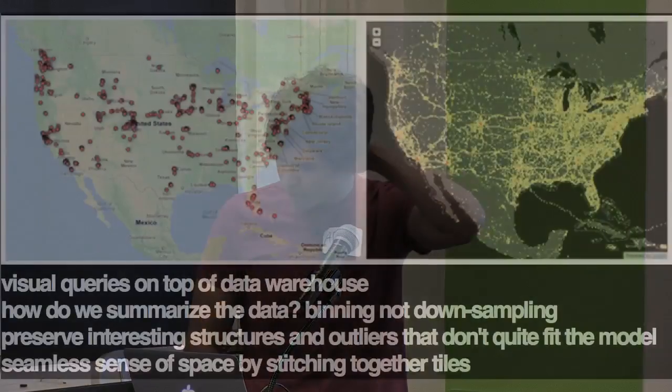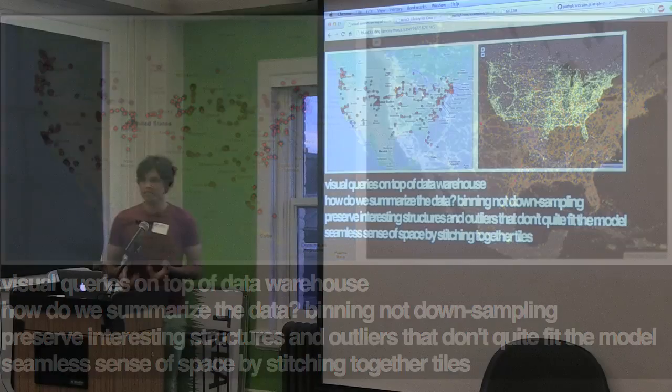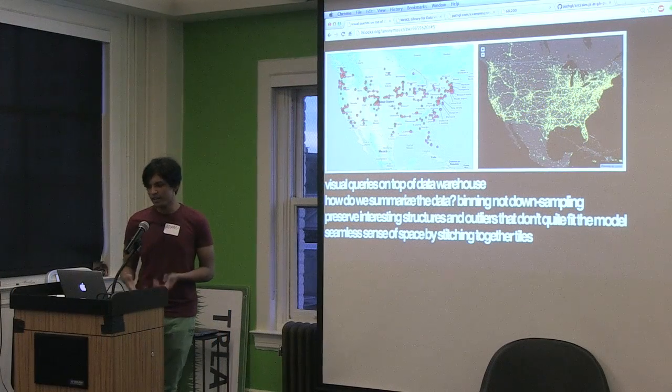One of the big libraries for doing that kind of exploration is Crossfilter, by Mike Bostock. It has coordinated views where you can brush through them and filter data in multiple dimensions. But it kind of falls over on bigger datasets. There was a great paper a few months ago called Immense, about how after about a million data points, Crossfilter starts to die.